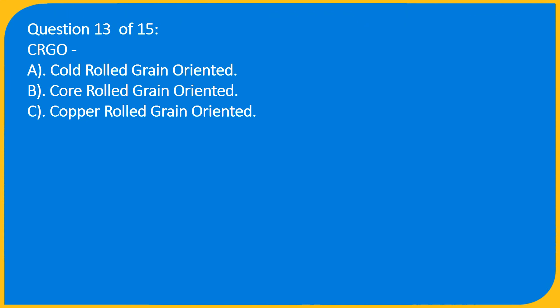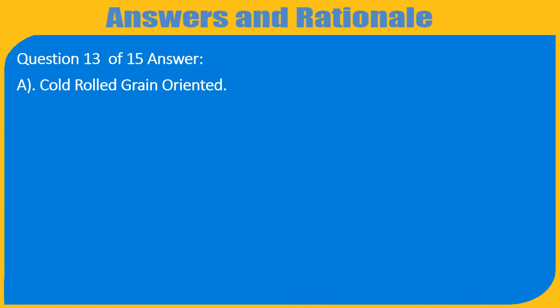Question 13 of 15: CRGO stands for — A. Cold Rolled Grain Oriented. B. Core Rolled Grain Oriented. C. Copper Rolled Grain Oriented. Answer: A. Cold Rolled Grain Oriented.